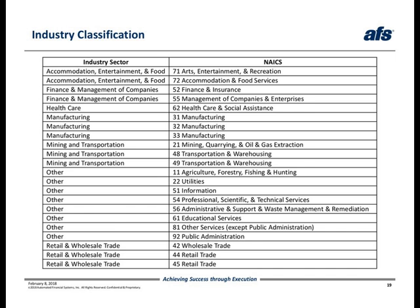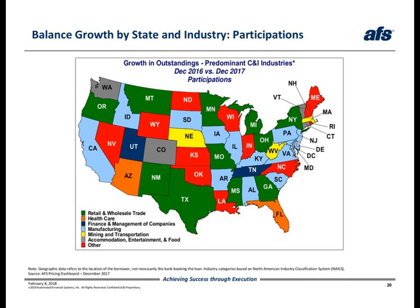On the next slide, we'll leverage the same mapping to analyze industry growth across the states for participations. On slide 20, we again see South Dakota and Alabama reporting manufacturing as the segment with the largest growth, this time for participations, which again is shown here with the light blue shading. States in the mid-Atlantic part of the country and other states sprinkled across the country also reported their largest increase in the manufacturing segment.